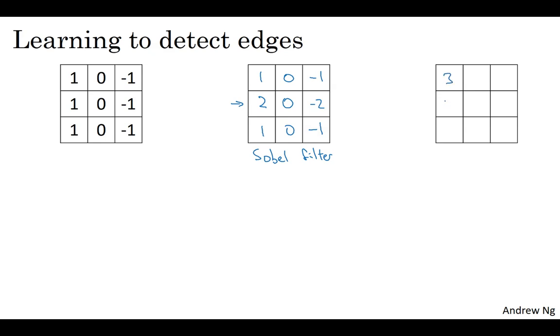Like maybe instead of 1, 2, 1, it should be 3, 10, 3, and then minus 3, minus 10, minus 3. This is called a Scharr filter, and this has yet other slightly different properties. This is just for vertical edge detection. If you flip it 90 degrees, you get horizontal edge detection.